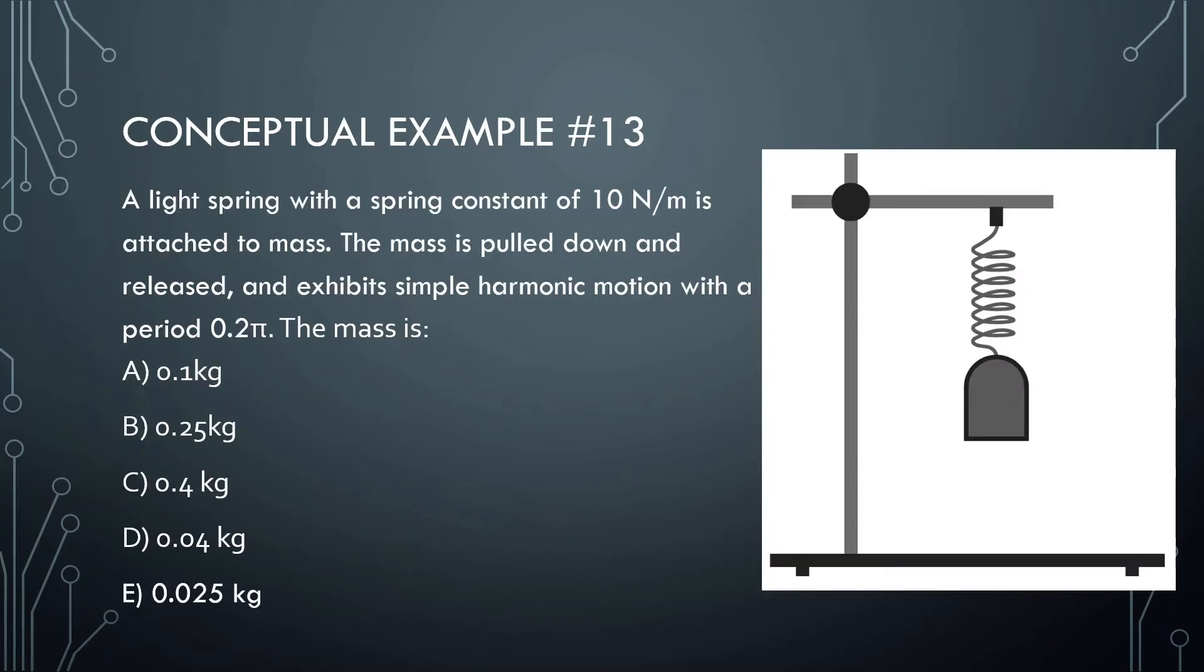Okay, let's move on to the next one. A light spring with a spring constant of 10 newtons per meter is attached to a mass. The mass is pulled down and released and exhibits simple harmonic motion with a period of 0.2π. The mass is blank. Okay, so again, we know that period is equal to 2π square root of m over k, and this is a period of a spring.